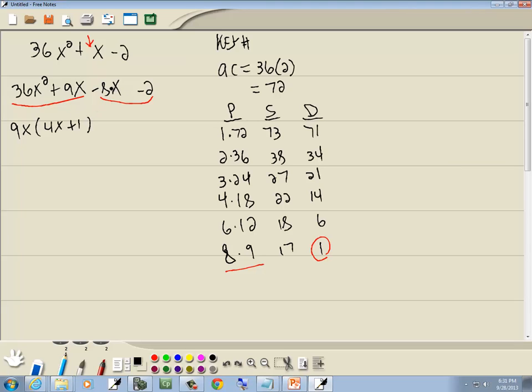The second group, both divisible by 2, my first term is negative, so I'll factor out a negative 2. And that gives us 4x plus 1.